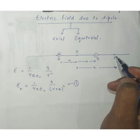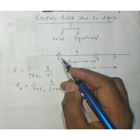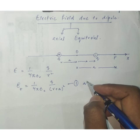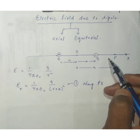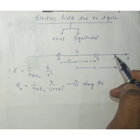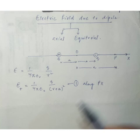Now, the direction of E+: since the charge is positive, the electric field due to a positive charge is radially outward. So at point P, the electric field due to the positive charge will be directed away from the positive charge, which is along the direction from the positive charge toward P — along PX direction.